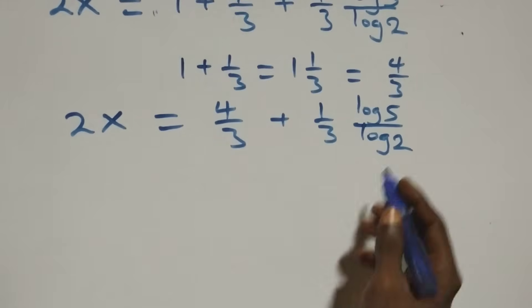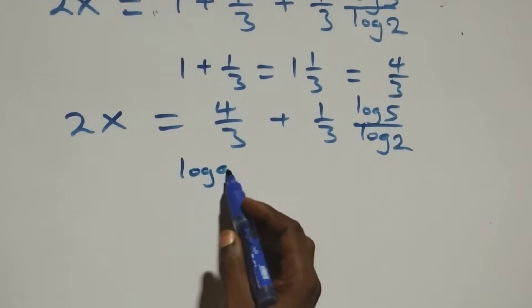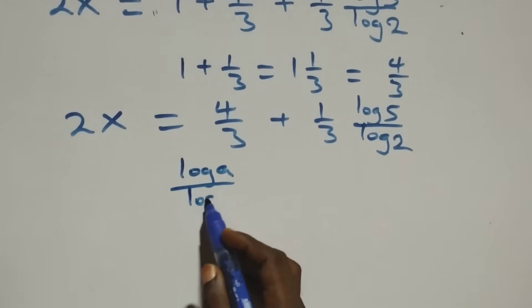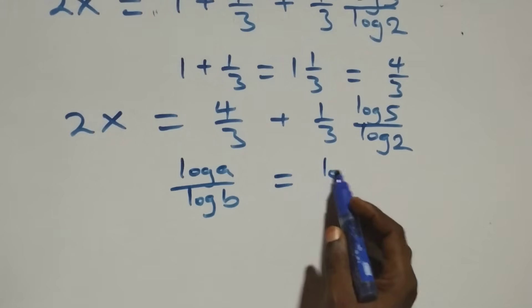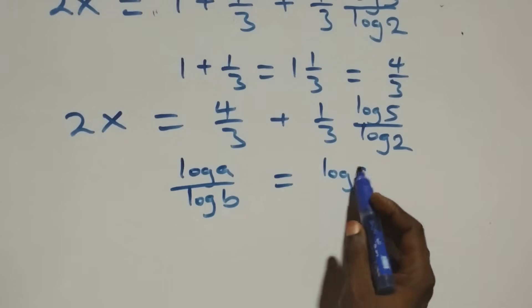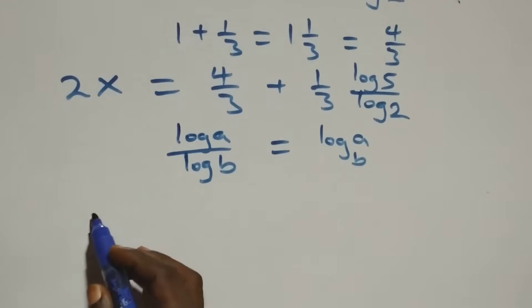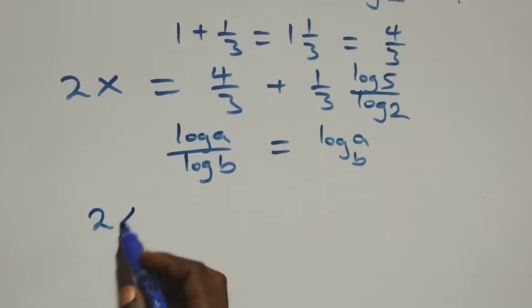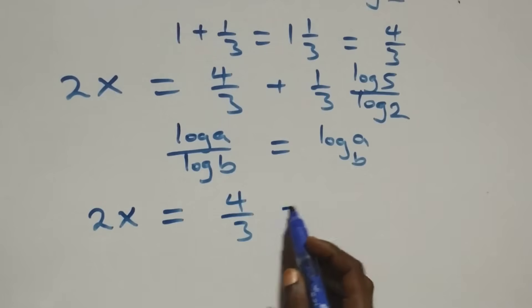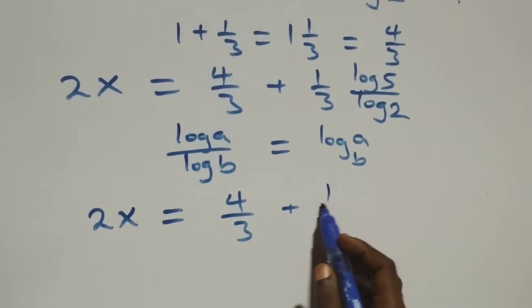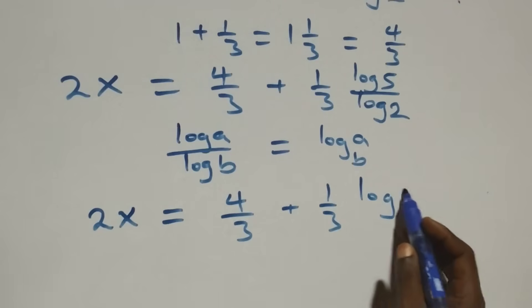We apply the change of base formula. What we have becomes 2x equals 4 over 3 plus 1 over 3 log 5 base 2.